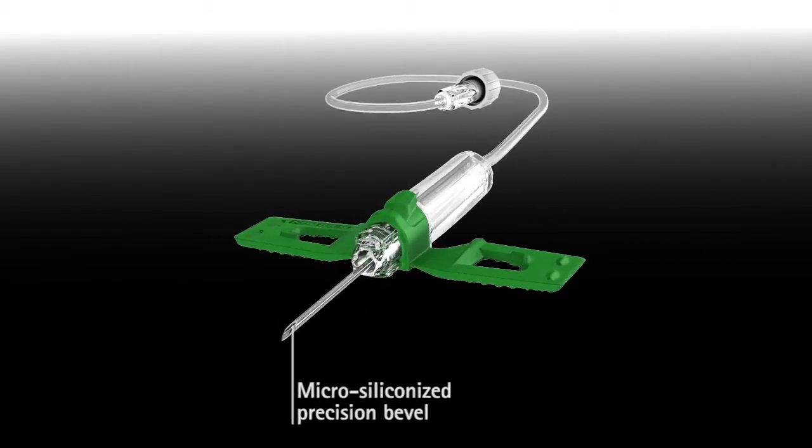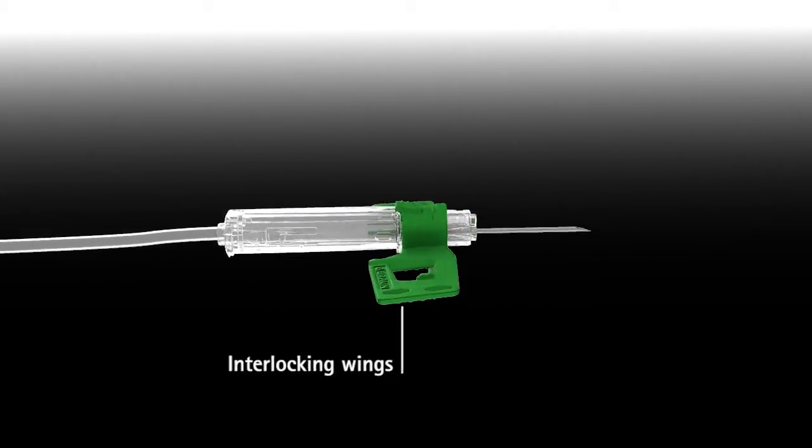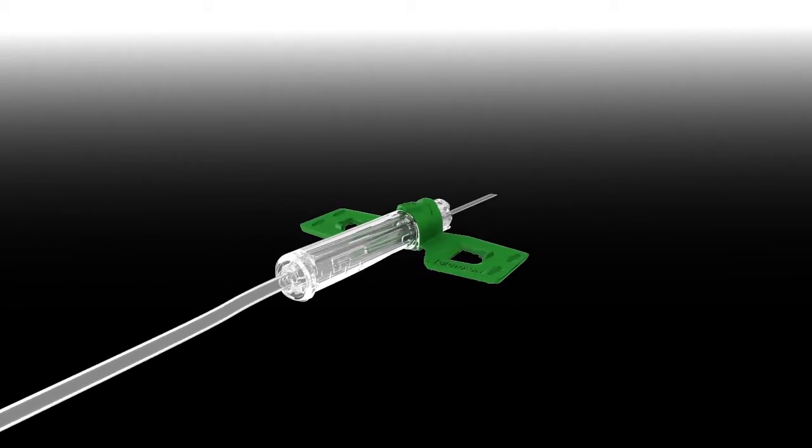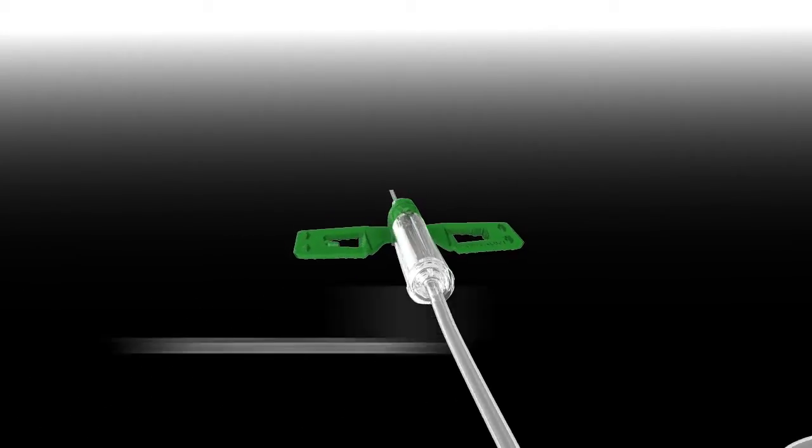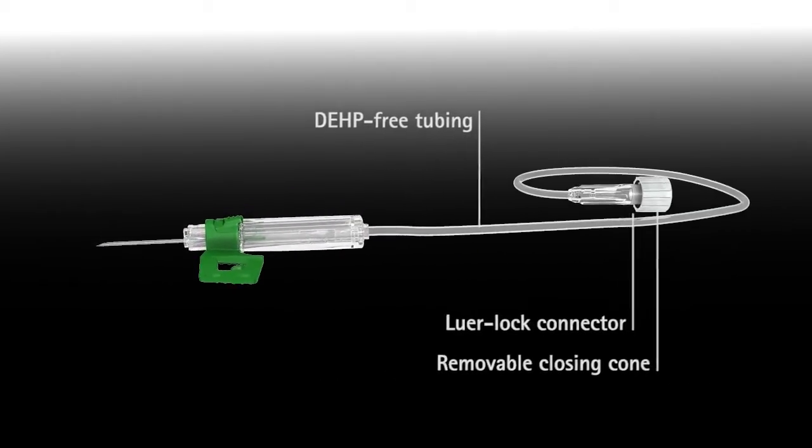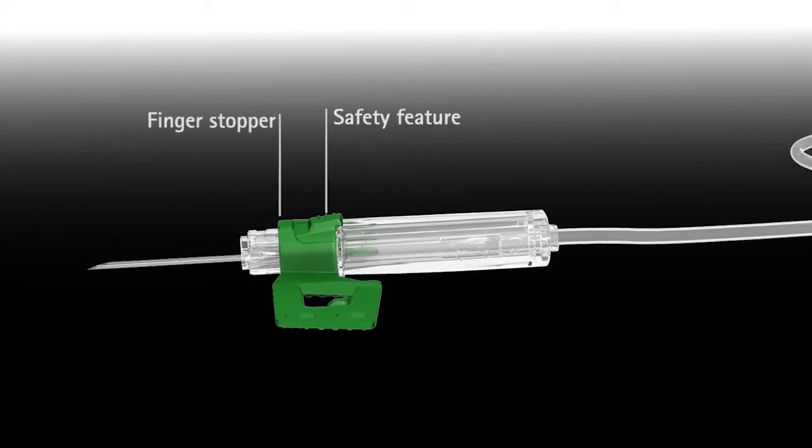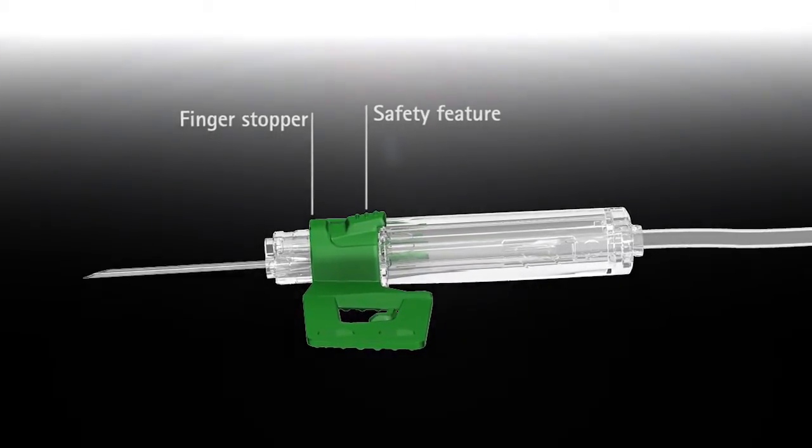With VinoFix Safety, B-Brown provides you with an advanced safety winged IV needle for short-term infusion, injection, transfusion and blood collection procedures. Thanks to its intuitive safety feature, the B-Brown VinoFix Safety effectively reduces the risk of needle stick injuries and related infections.